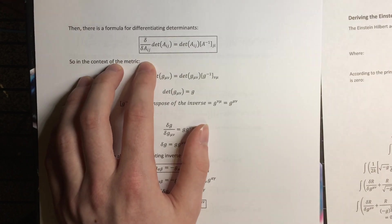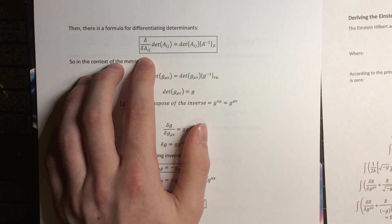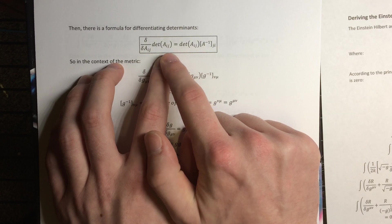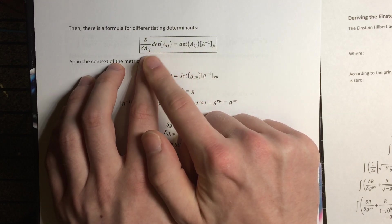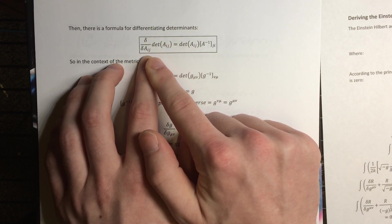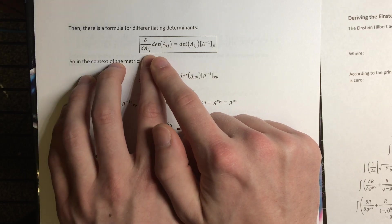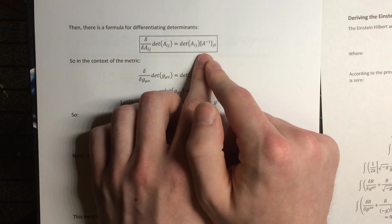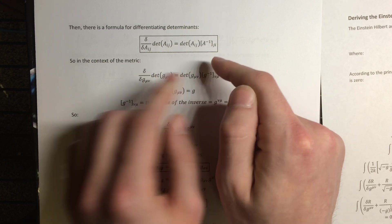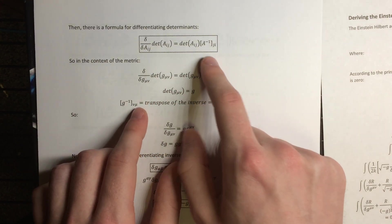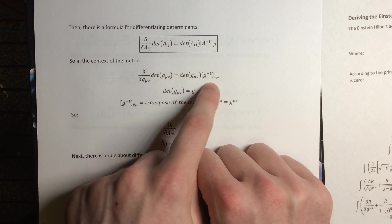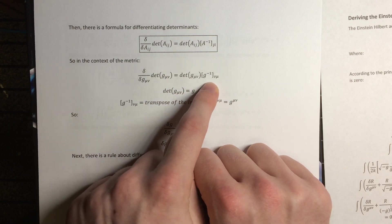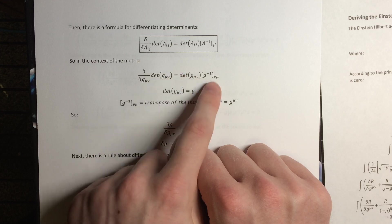So, to calculate the variation of the determinant of a matrix, we need to use something that I'm pretty sure is called the Jacobi identity, though I don't remember exactly. So if we want to differentiate the determinant of a matrix with respect to the components of that matrix, then the Jacobi identity tells us that it's the determinant of the matrix times the transpose of the inverse.